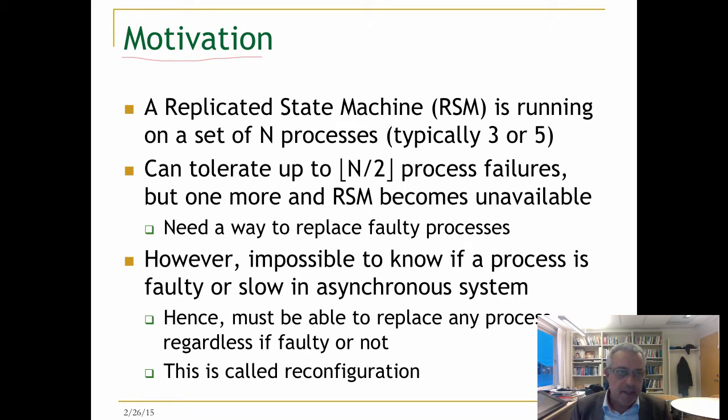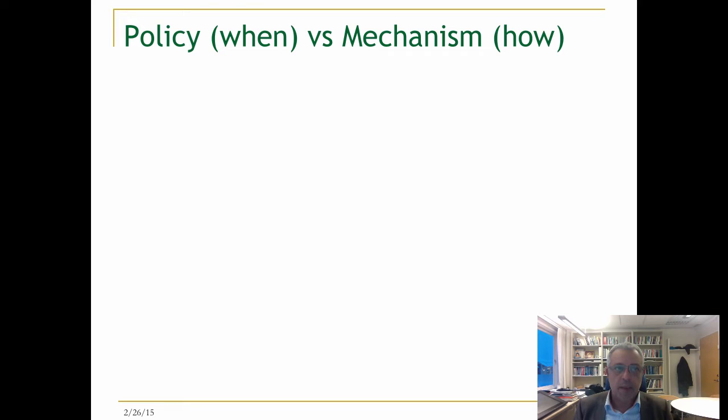Reconfiguration happens in many systems where you use a set of processes together to represent a state machine. The processes could be in different servers, different racks, or even over different data centers. For example, it is typical for Google to have units of replicated state machines of five nodes: two nodes in some data centers and three nodes in the main data center.